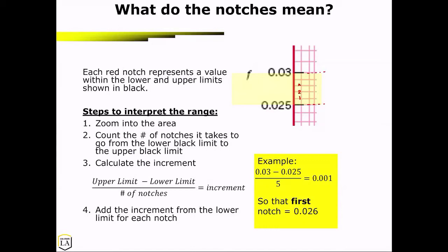So this is our example calculation, the upper limit minus the lower limit divided by the number of notches. So that means the increment here is equal to 0.001.